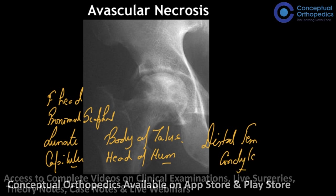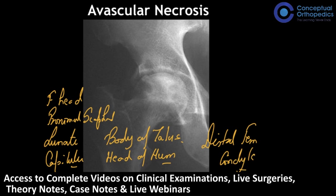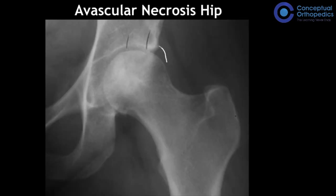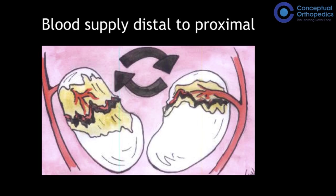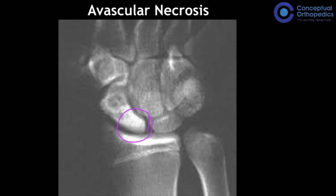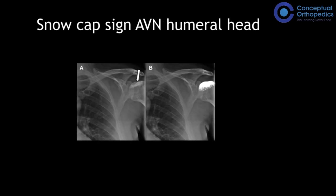Remember: dead bone is always white. The vascularity is absent, so there is no process to cause osteopenia — that is why the dead bone appears white. The blood supply to the scaphoid goes from distal to proximal, so a fracture results in the proximal pole undergoing avascular necrosis and appearing white. In the humerus, humeral head AVN appears white — called the snow cap sign.